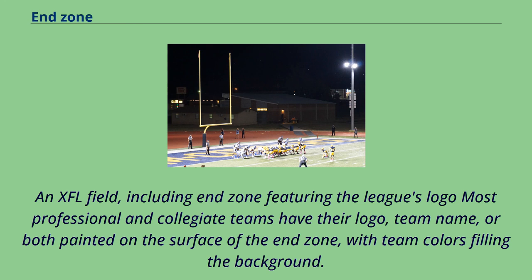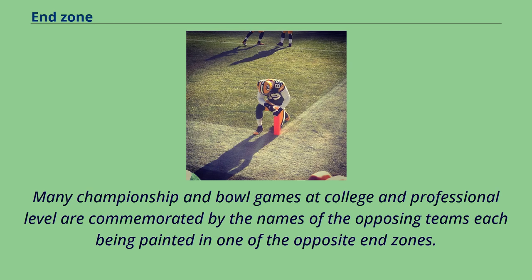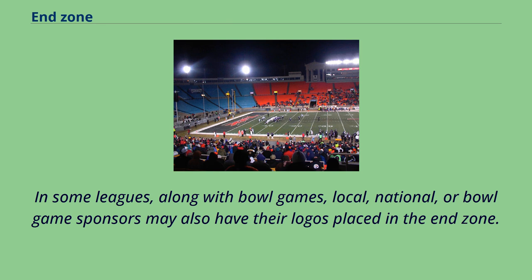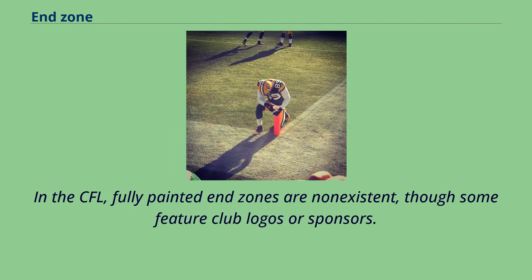Most professional and collegiate teams have their logo, team name, or both painted on the surface of the end zone, with team colors filling the background. Many championship and bowl games at college and professional level are commemorated by the names of the opposing teams, each being painted in one of the opposite end zones. In some leagues, along with bowl games, local, national, or bowl game sponsors may also have their logos placed in the end zone. In the CFL, fully painted end zones are non-existent, though some feature club logos or sponsors.